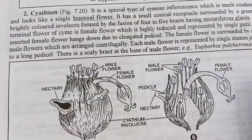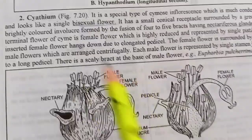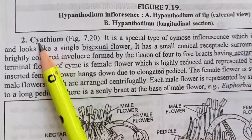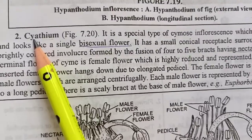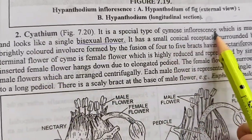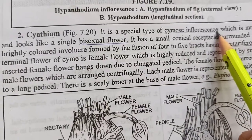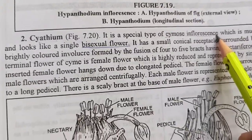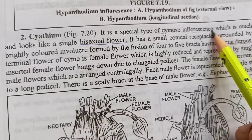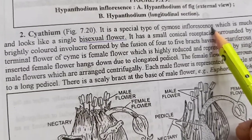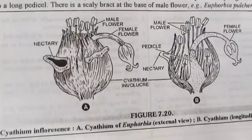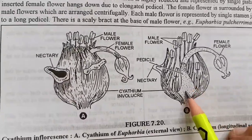Now let's study the other special type of inflorescence, that is cyathium. Cyathium is also a special type of cymose inflorescence. Kyunki jo hum special types of inflorescence padh rahe hain, inme jo bhi inflorescence hain, yeh saari cymose inflorescence hi hain. Cyathium mein kya hota hai — jaise ki Euphorbia ka diagram hai hamare paas.